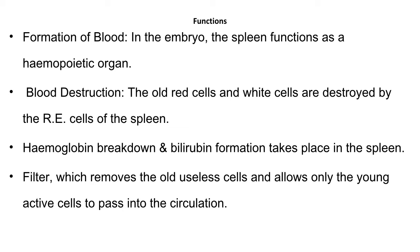The hemoglobin is released on the destruction of the RBCs and this hemoglobin that is released is also broken down in the spleen. From the breakdown of the hemoglobin, bilirubin is formed in the spleen and this bilirubin passes into the plasma.